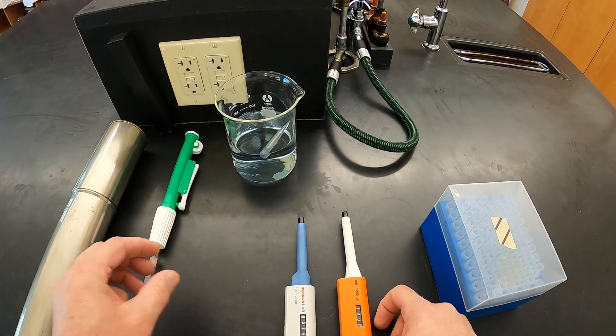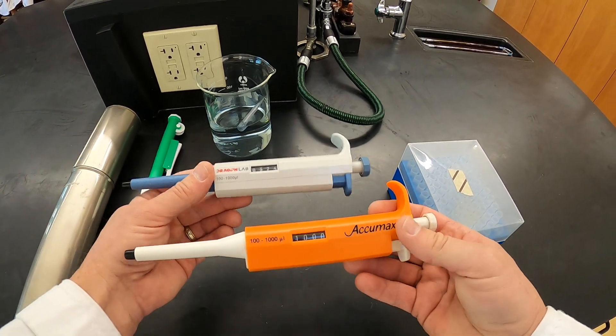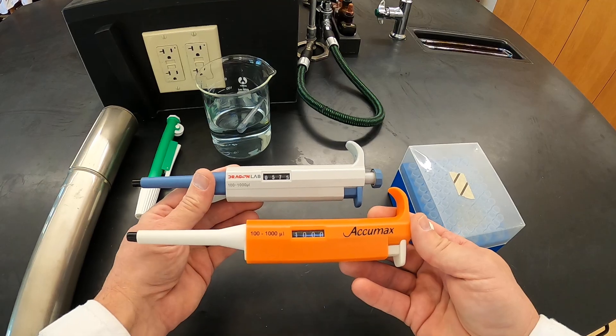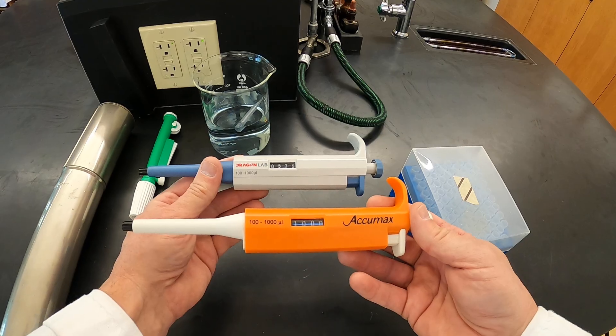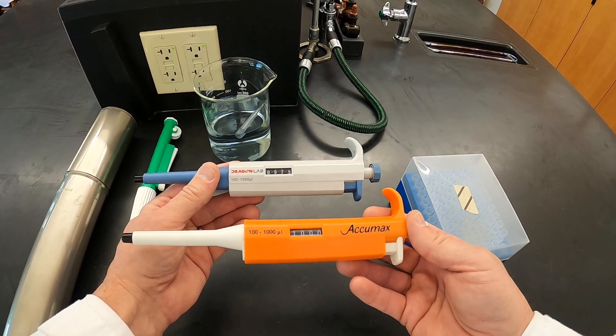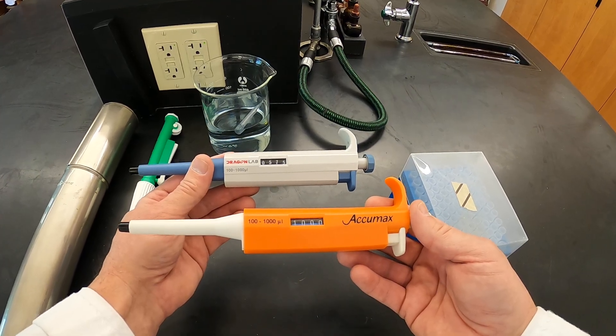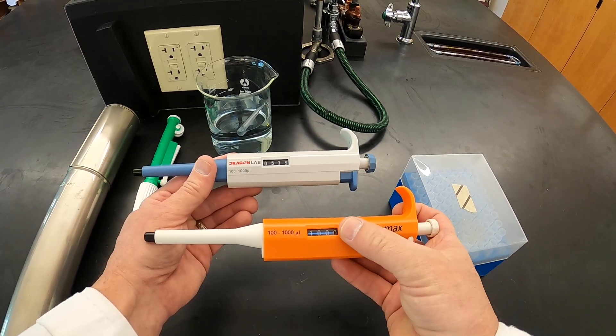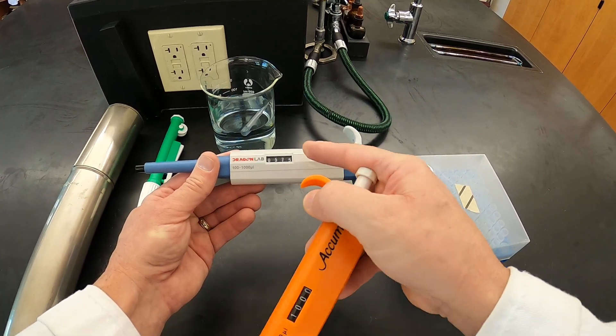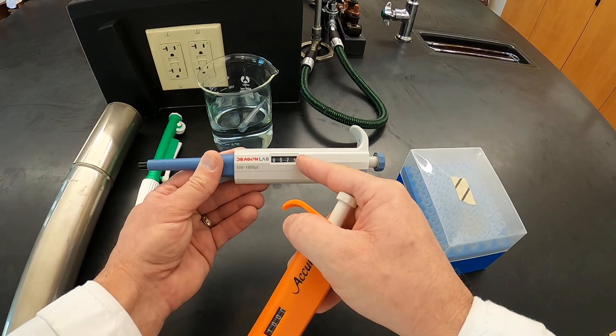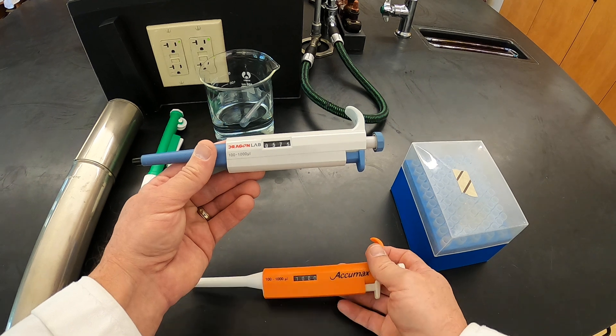So these two things right here are micropipettes. These two micropipettes are actually from different manufacturers, but they have the same functional range here, 100 to 1000 microliters. Now you may recall from our unit conversions that 1000 microliters is equivalent to one milliliter. So this one right here in the window is set to 1000 microliters or one milliliter. This one here is set to 575 microliters or a little bit more than half of a milliliter.